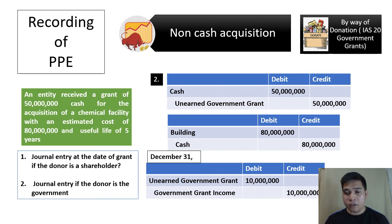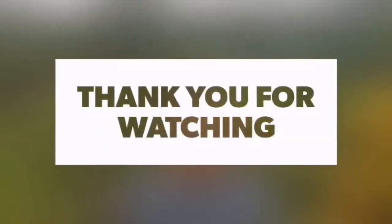So: debit Unearned Government Grant, credit Government Grant Income. By the end of the fifth year, the Unearned Government Grant account will be zeroed out, since it has been recognized over time at 10 million per year.